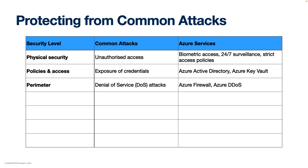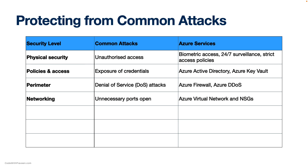In the case of perimeter security, Azure provides network security features such as Azure Firewall and Azure DDoS protection, which help protect against denial of service attacks that can overwhelm network resources. Azure Virtual Network allows you to set up network security groups to control inbound and outbound traffic, which reduces the risk of exposing unnecessary ports and preventing unauthorized access to VMs through SSH or RDP.